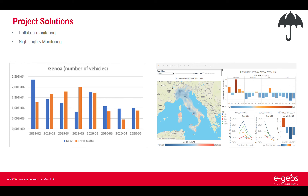Here you can see an example of indicators computed in the pollution domain. On the left is represented the correlation between road traffic movement and the pollution measured processing the Sentinel 5P data. On the right instead you can see the NO2 trend on Italy in 2019 and 2020.